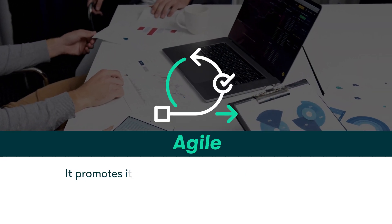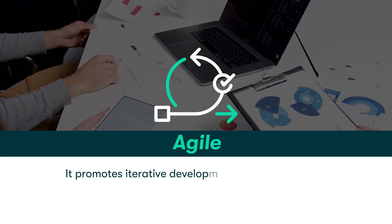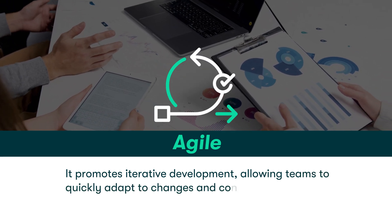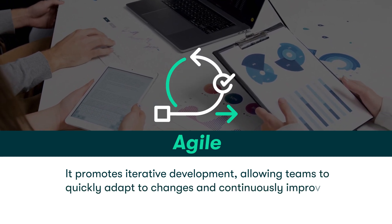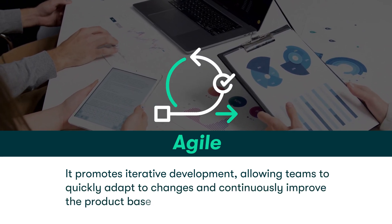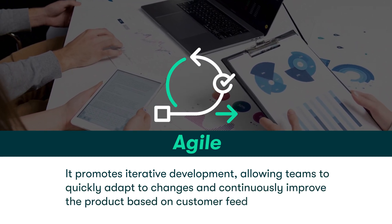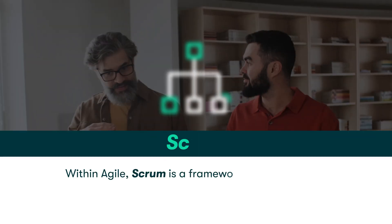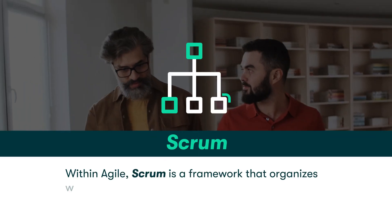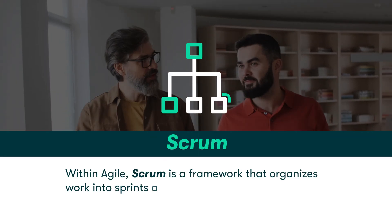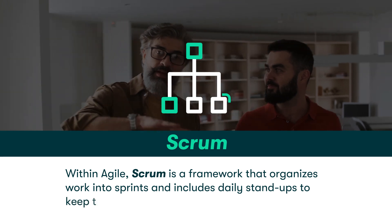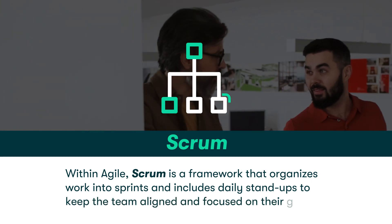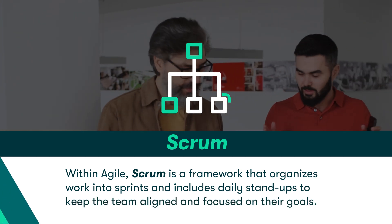Agile promotes iterative development, allowing teams to quickly adapt to changes and continuously improve the product based on customer feedback. Within Agile, Scrum is a framework that organizes work into sprints and includes daily stand-ups to keep the team aligned and focused on their goals.